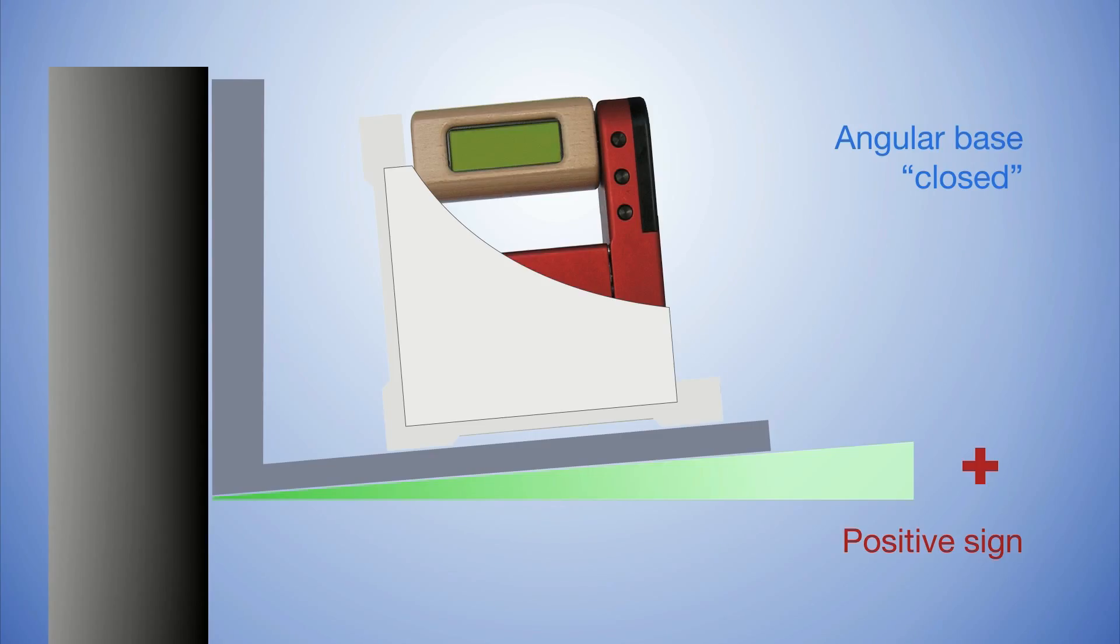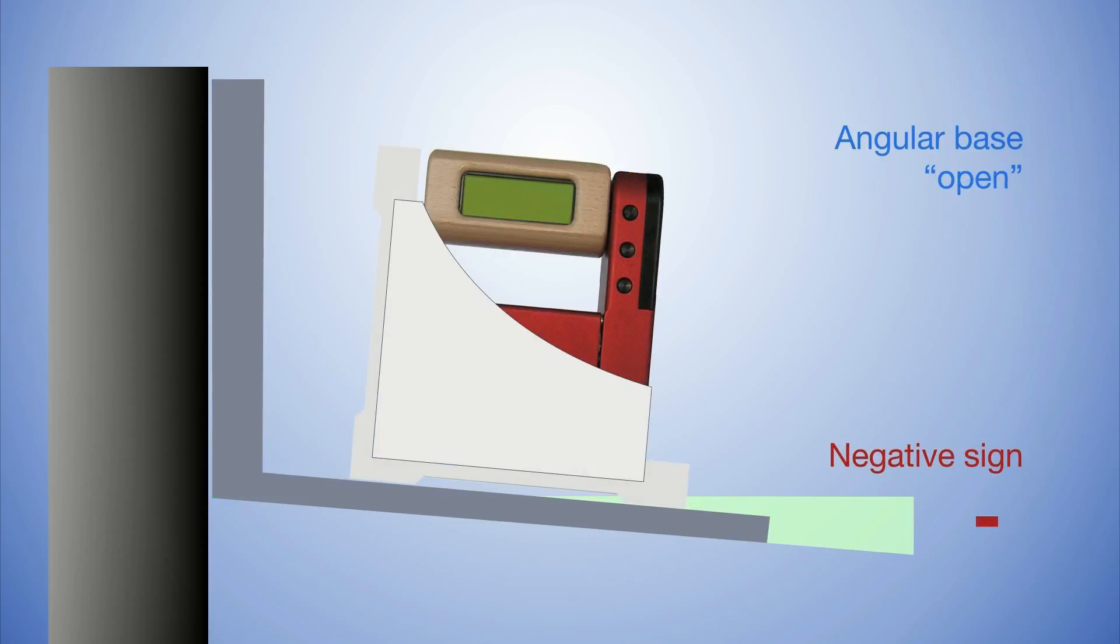Graphically, you have to imagine this as follows. If the bases are too closed, then the horizontal base is pointing slightly upwards if the vertical base is sitting on a perfectly vertical plane. The angular error of the instrument will then have a positive sign. The angular error of the instrument has a negative sign.